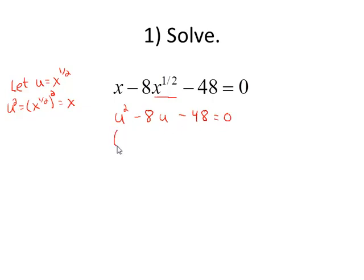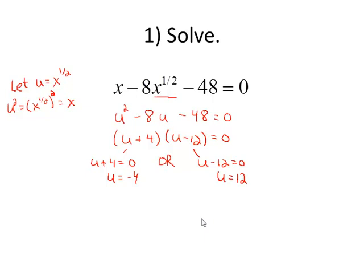This one factors, so it's u plus 4 times u minus 12 equals zero. If u plus 4 is equal to zero, u is negative 4. If u minus 12 is equal to zero, and we add 12 to both sides, we find that u is equal to 12.